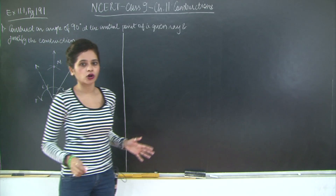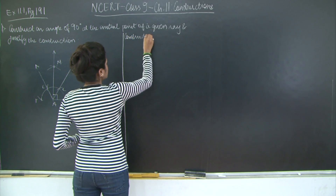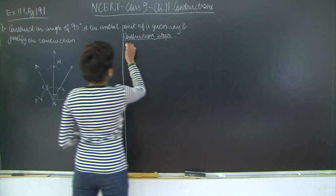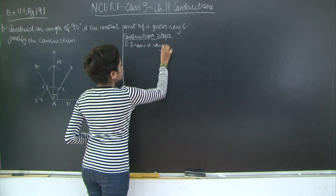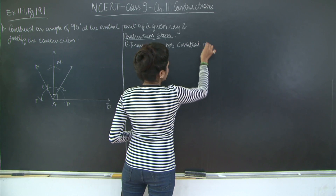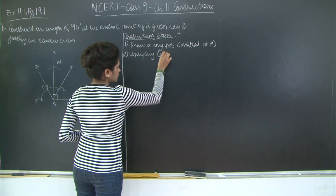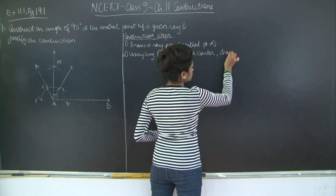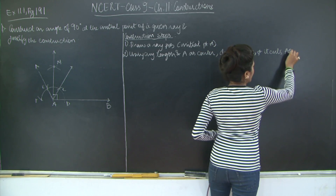We will go about writing the construction steps and then we will also justify it. Construction steps: First, draw a ray AB with initial point A. Then, using any length and A as centre, draw an arc such that it cuts AB at point D.